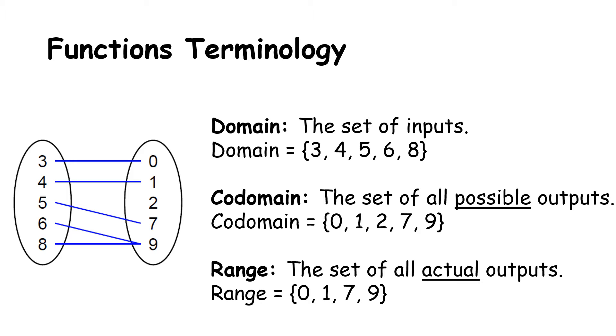The range is then the set of all actual outputs. Notice there on the right-hand side of the mapping diagram that the value of 2, although it's there and it could be used, it is not used. So the set of actual outputs are 0, 1, 7, 9. It is really important that you understand the subtle difference between the co-domain, so the possible outputs, versus the range, which is the actual outputs.